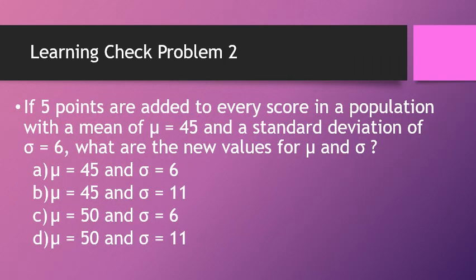Learning check problem two: If 5 points are added to every score in a population with a mean of 45 and a standard deviation of 6, what are the new values? When you add points to every score, you only add to the mean. The standard deviation remains the same. So the new mean is 50, and the standard deviation stays at 6.